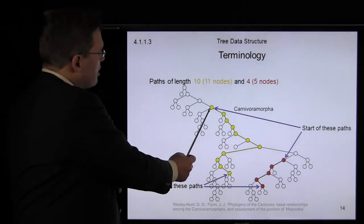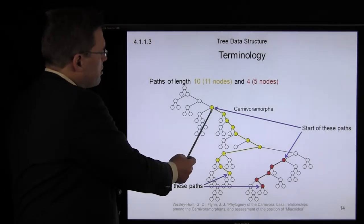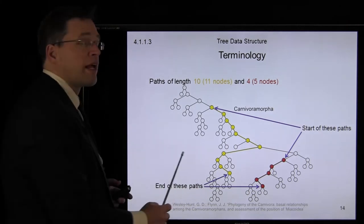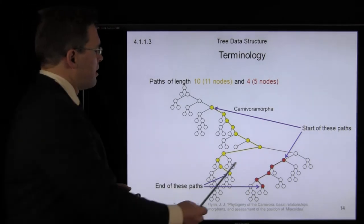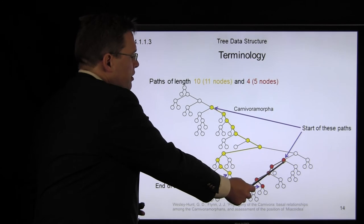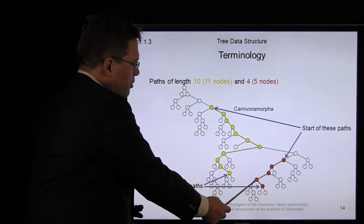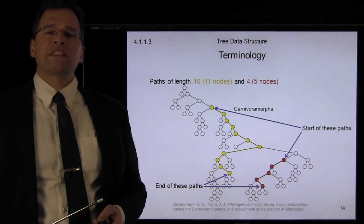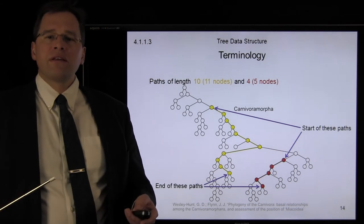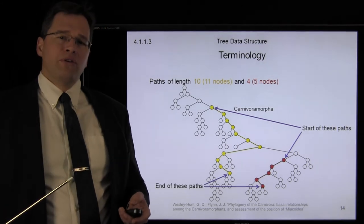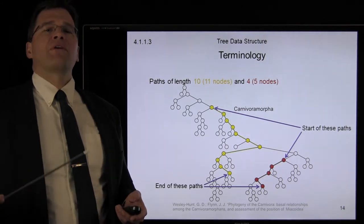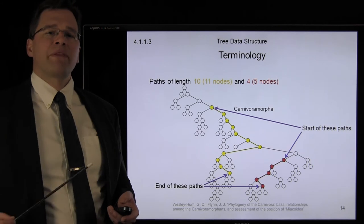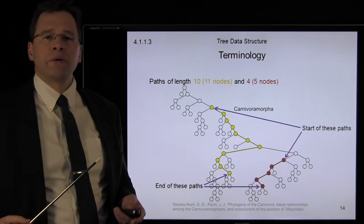Here we have two paths. Starting here, we have one path of 11 nodes, and therefore it's length 10. Here we have a second path starting with this node going down here — it contains five nodes, and therefore its length is four. The length of the path is the number of steps that must be taken to get from the first node to the last node.